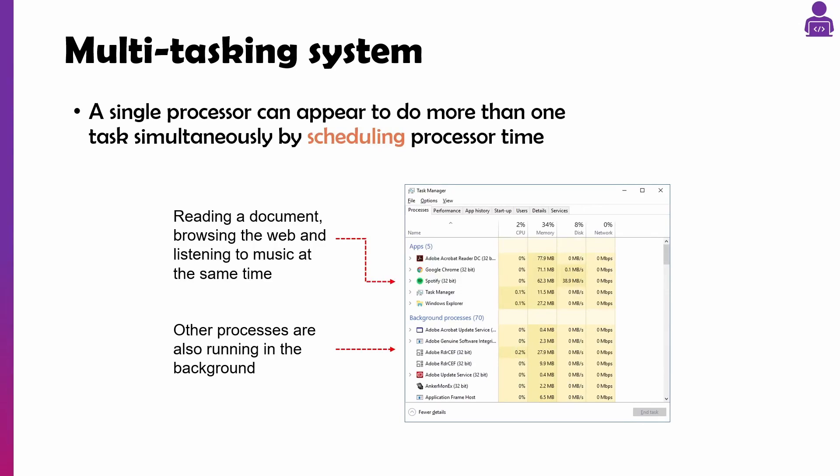Then we've got a multi-tasking operating system, where a single processor can appear to do more than one thing simultaneously by scheduling, like we looked at in the last video. So it could be reading a document whilst browsing the web, listening to music, whilst all your background processes are going on — it's just switching between them as and when it needs to.